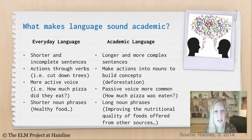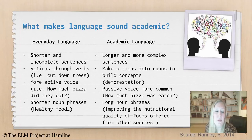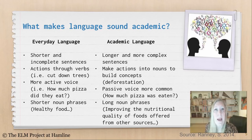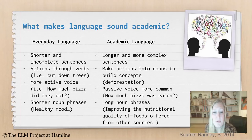In everyday language, we use more active voice — 'How much pizza did they eat,' for example. In academic language, passive voice is more common: 'How much pizza was eaten.' In everyday language, we use shorter noun phrases, like 'healthy food.' In academic language, we use long noun phrases — for example, 'improving the nutritional quality of foods offered from other sources.'